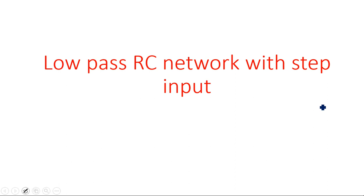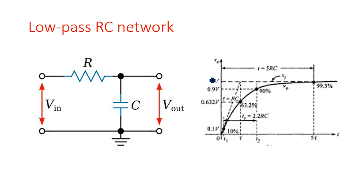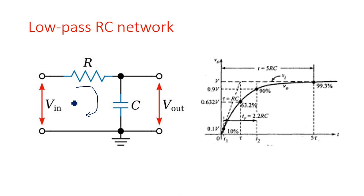This is the low-pass RC network, where the resistor is connected between the input and output terminal, and the capacitor is connected across the output — resistance followed by capacitor. A current I(t) passes through it whenever the input voltage is applied.